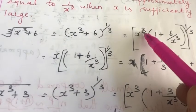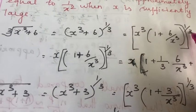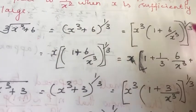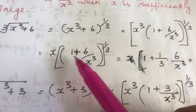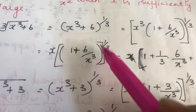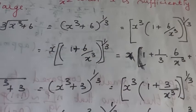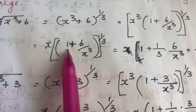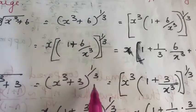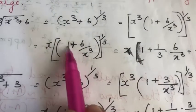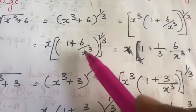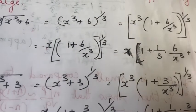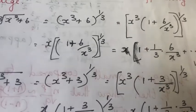Here x³ is there and the power is 1/3. While combining these two, it will become x — the 3 and 3 will cancel. Now, let us expand this according to the expression (1 + x)^n: x · [1 + (1/3) · (6/x³) + ...]. The next square term will come and it will go on like this.